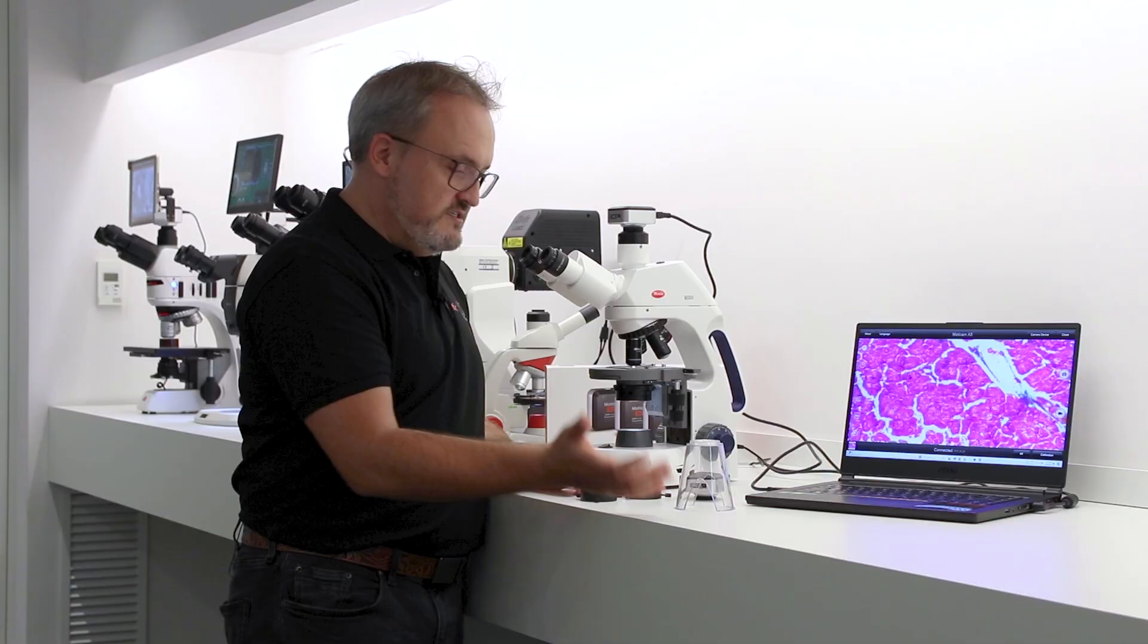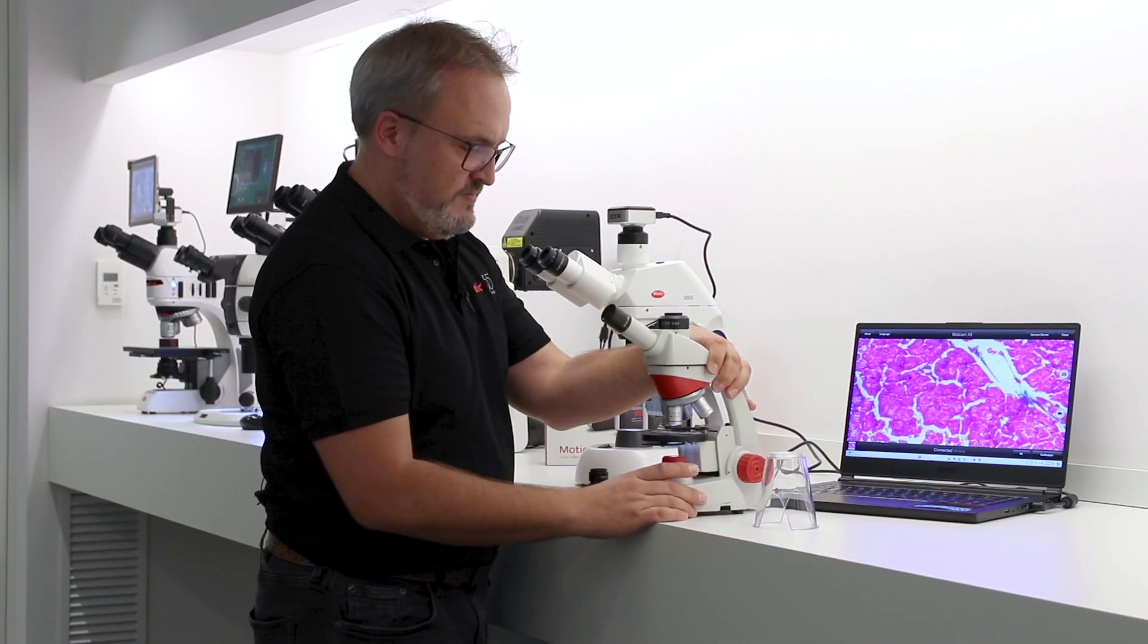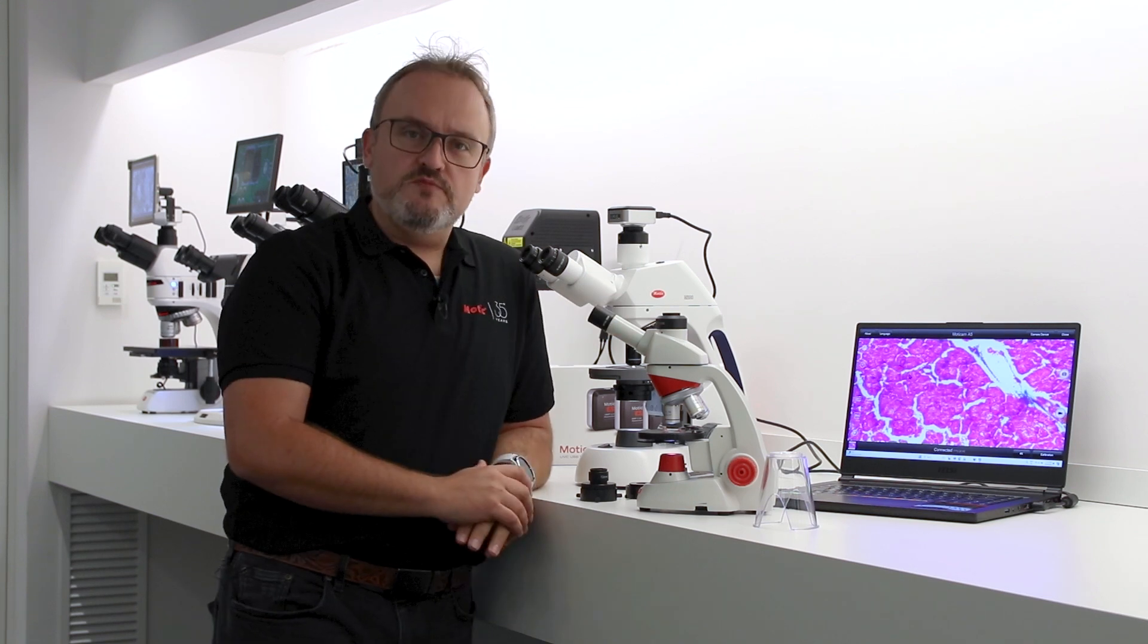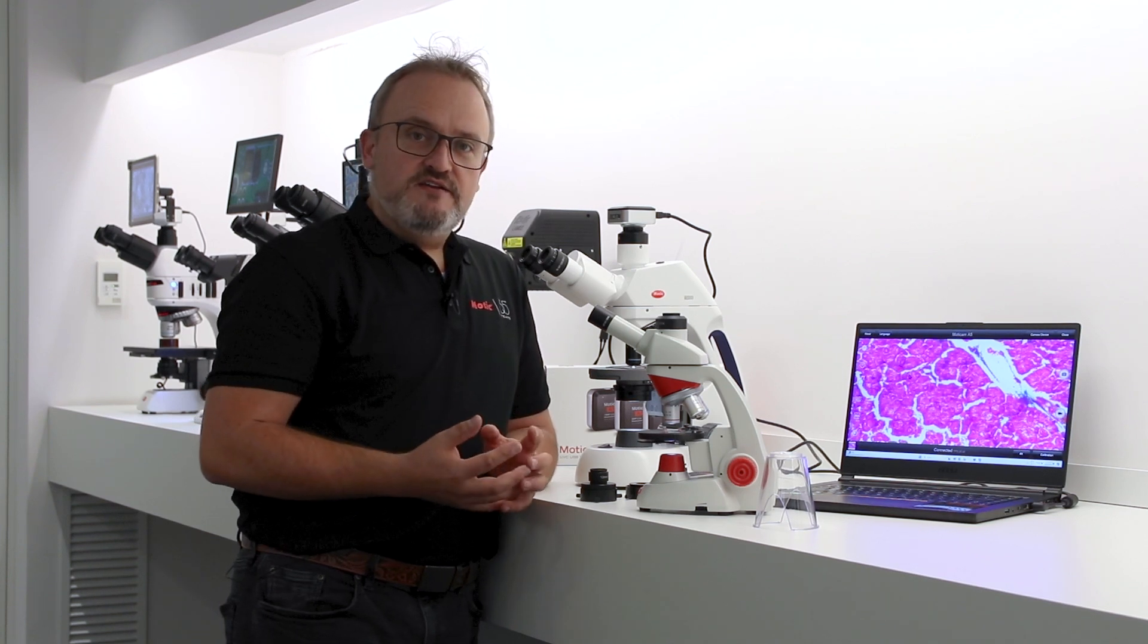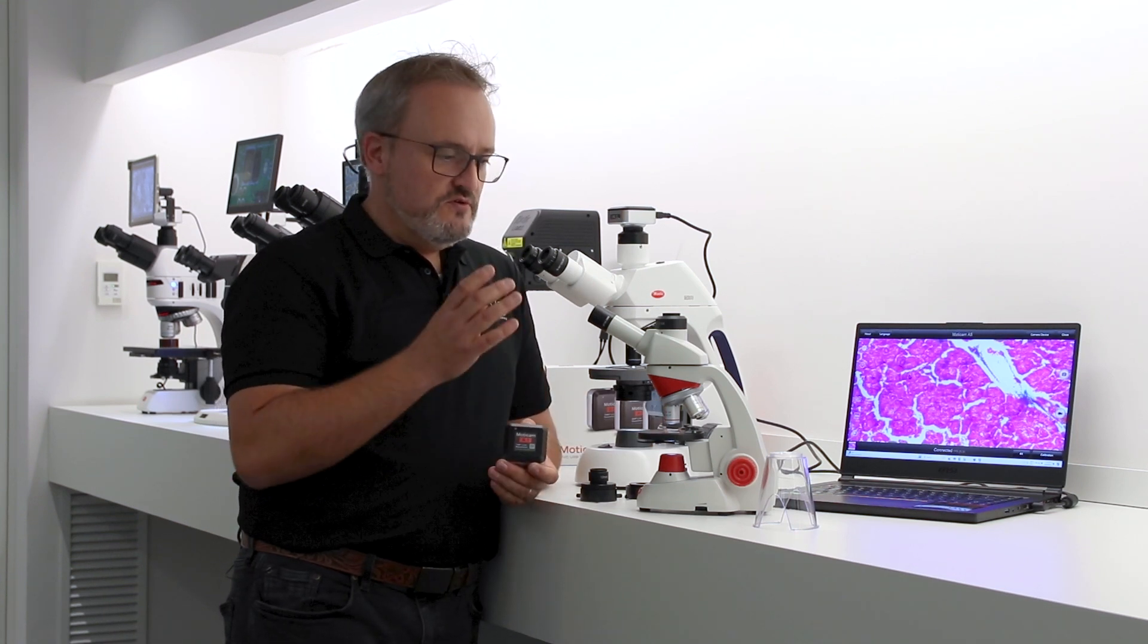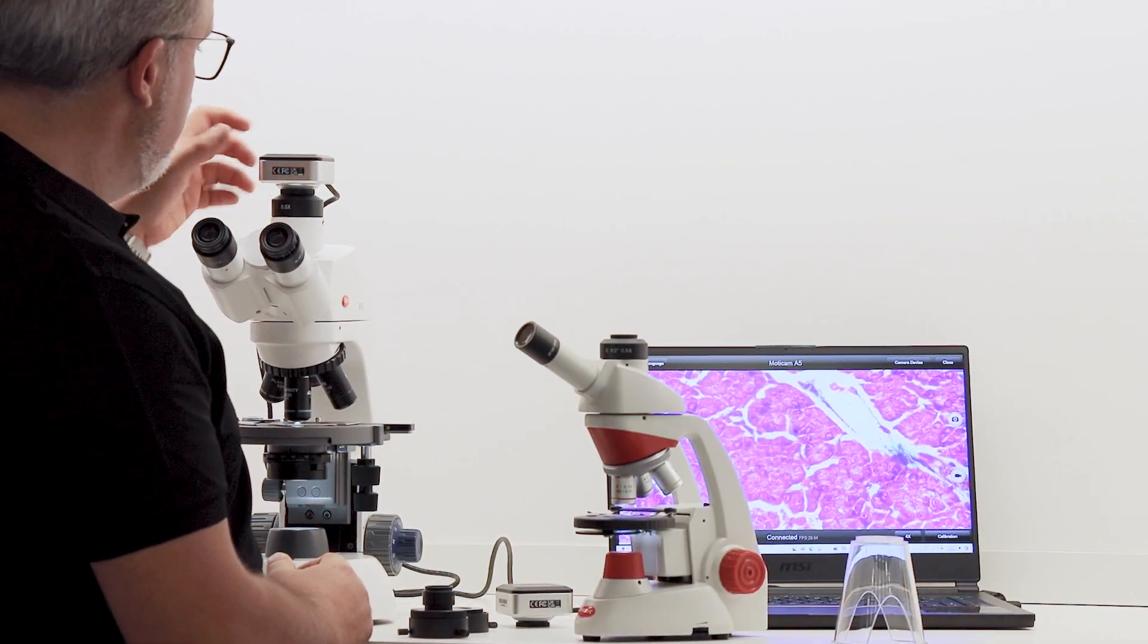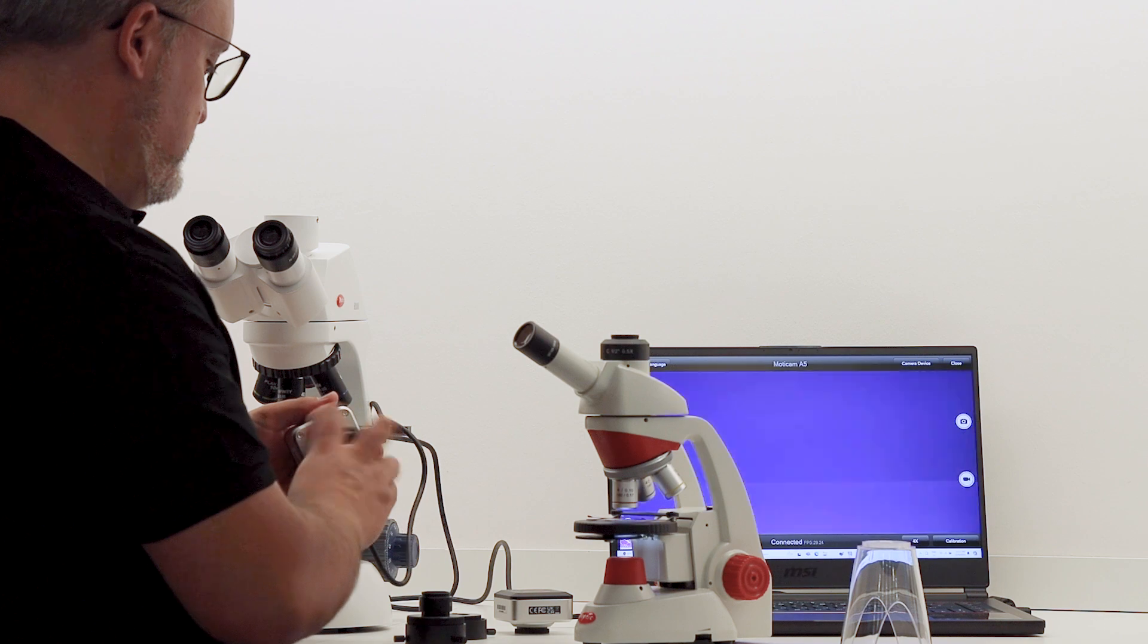But if you have a monocular microscope, imagine you don't have a trinocular, you don't want to change your microscope, you want to turn this into a digital microscope. The MOTICAM A-Line is priced at a point where even the entry line A1 makes it very affordable to upgrade virtually any microscope, even a monocular microscope, into a digital microscope. Just now I have this one on a trinocular, so if I take the camera away from the trinocular, I take away the c-mount adapter which is specific to a microscope.